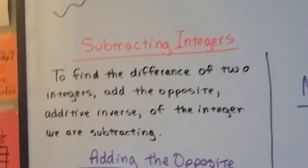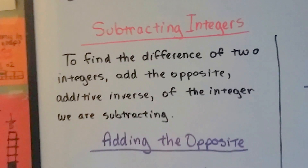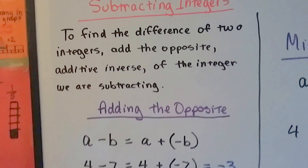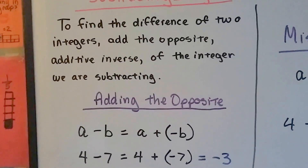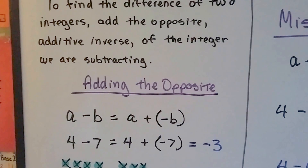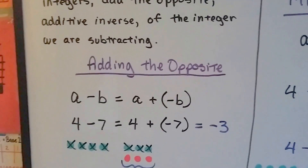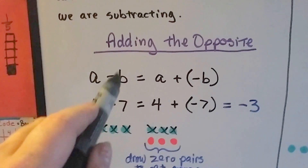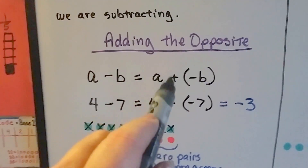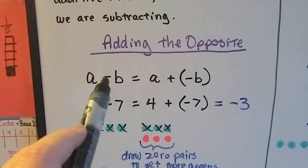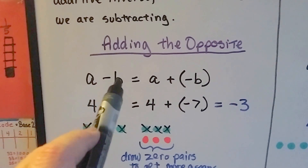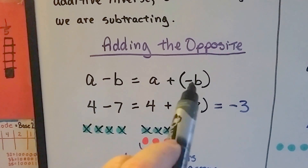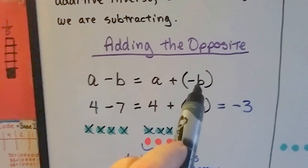Subtracting integers: to find the difference of two integers, we add the opposite. It's the additive inverse of the integer we are subtracting. A minus B equals A plus negative B. Instead of taking away a positive B, we add a negative B.